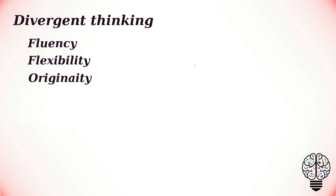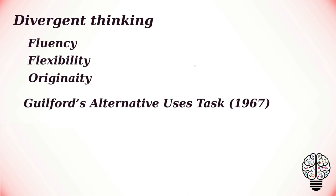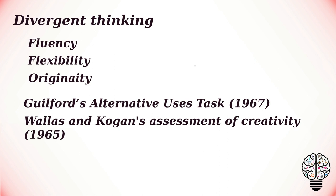Some tests of divergent thinking include Guilford's Alternative Uses test. The next is Wallach and Kogan's Assessment of Creativity, developed in 1965, in which examinees are asked to come up with many possible items that contain a specific component, such as things with wheels, round things, or things that make noise.